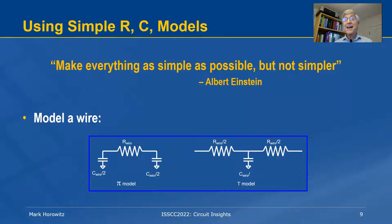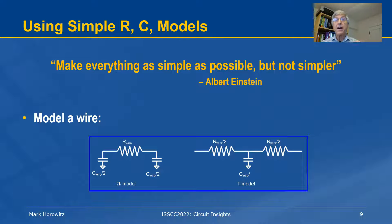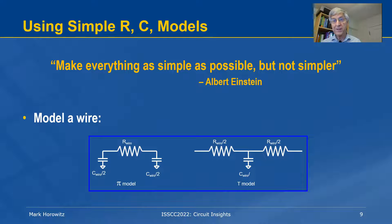As Albert Einstein once said, make everything as simple as possible, but not simpler. For us, we're really lucky that we can use very simple models consisting of only resistors and capacitors for all the elements we deal with on a digital integrated circuit. For analog integrated circuits, life gets a little bit more complicated and you need more complicated models.